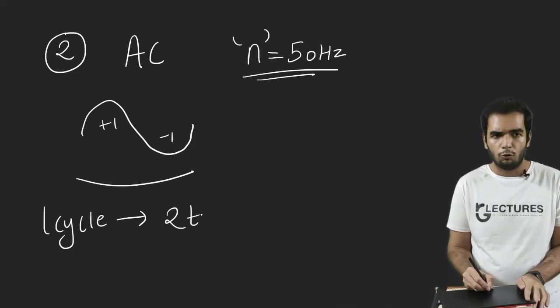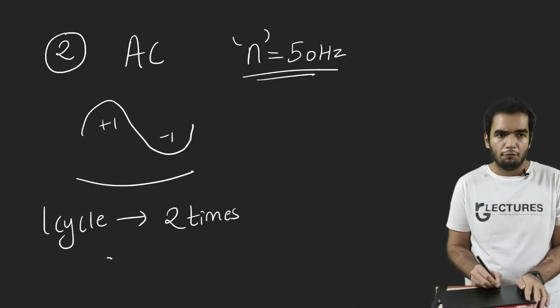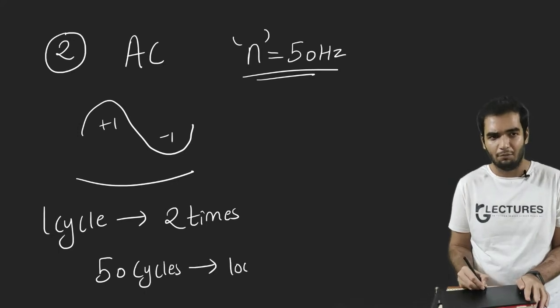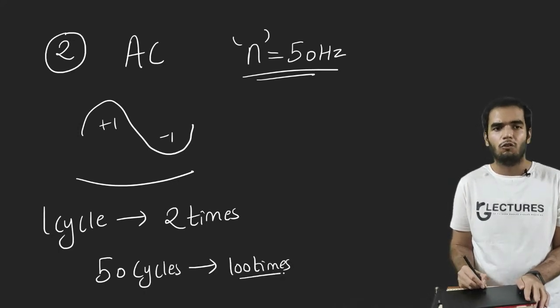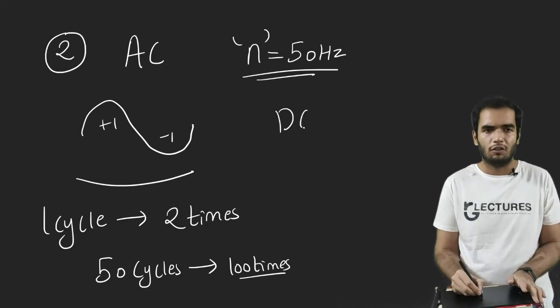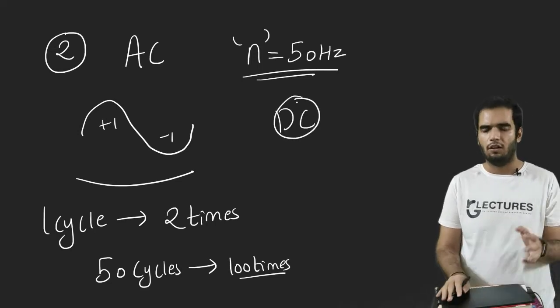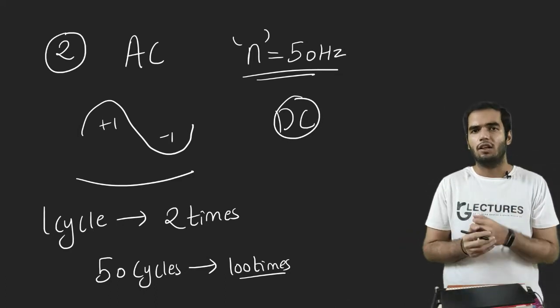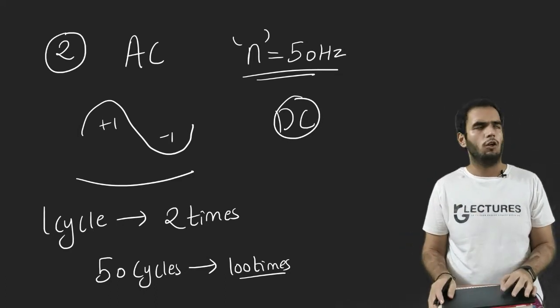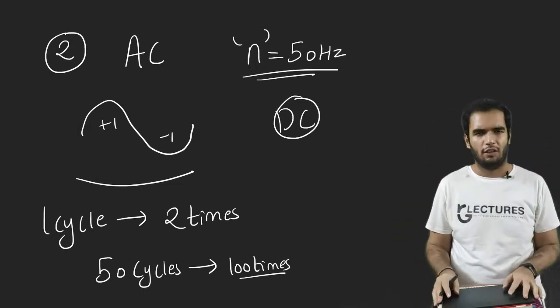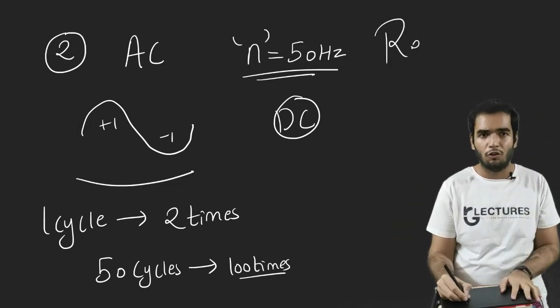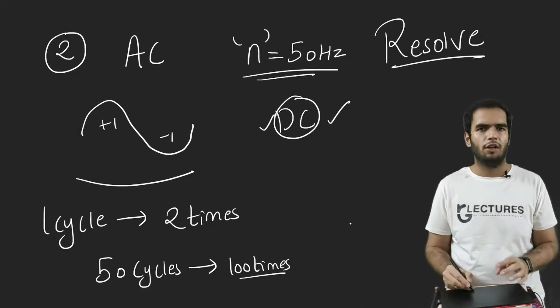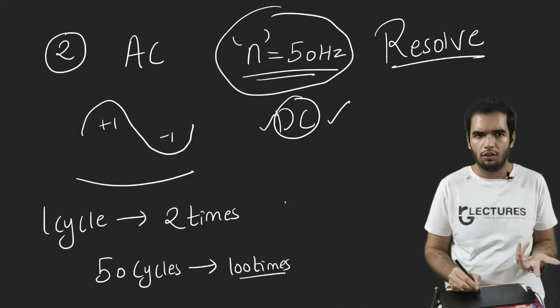That means one cycle consists of plus one minus one, two directions in one second. Then this cycle will repeat 50 times. In one cycle direction changes two times. So in 50 cycles, the direction will change 100 times. Now this is not the resolving power of DC voltmeter or DC ammeter. For example, if we see the light in our home, the light continuously varies, it continuously fluctuates. But what we see is a constant source of light because our eyes cannot resolve that much.